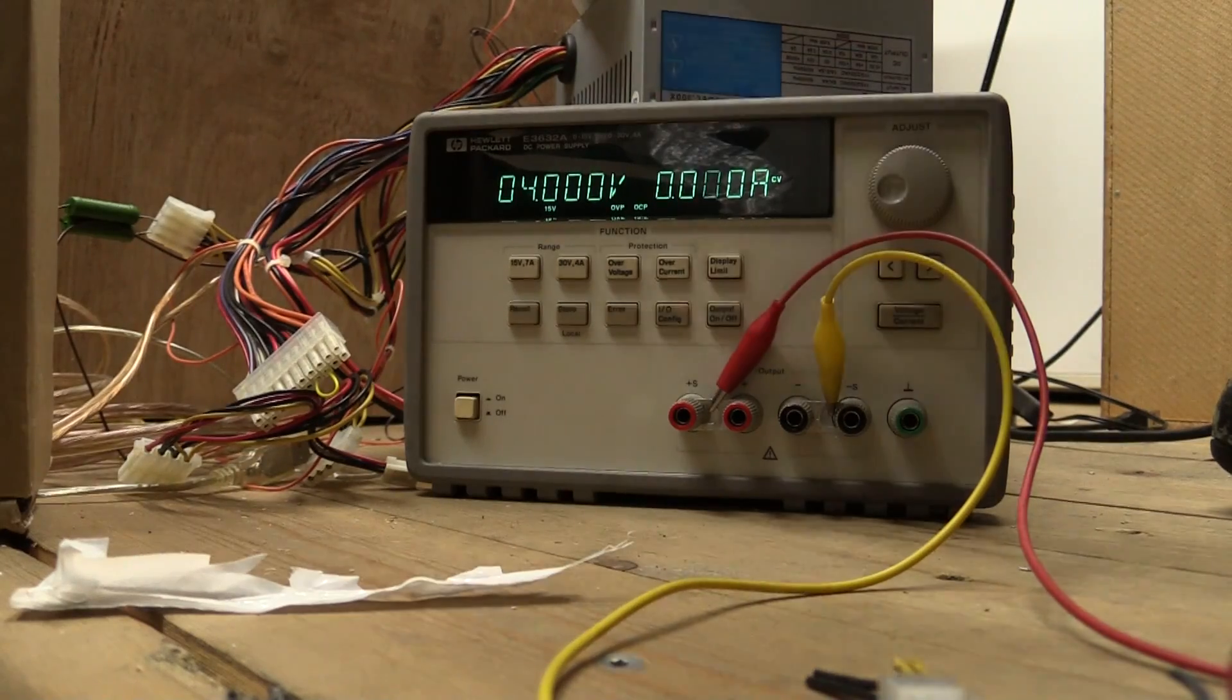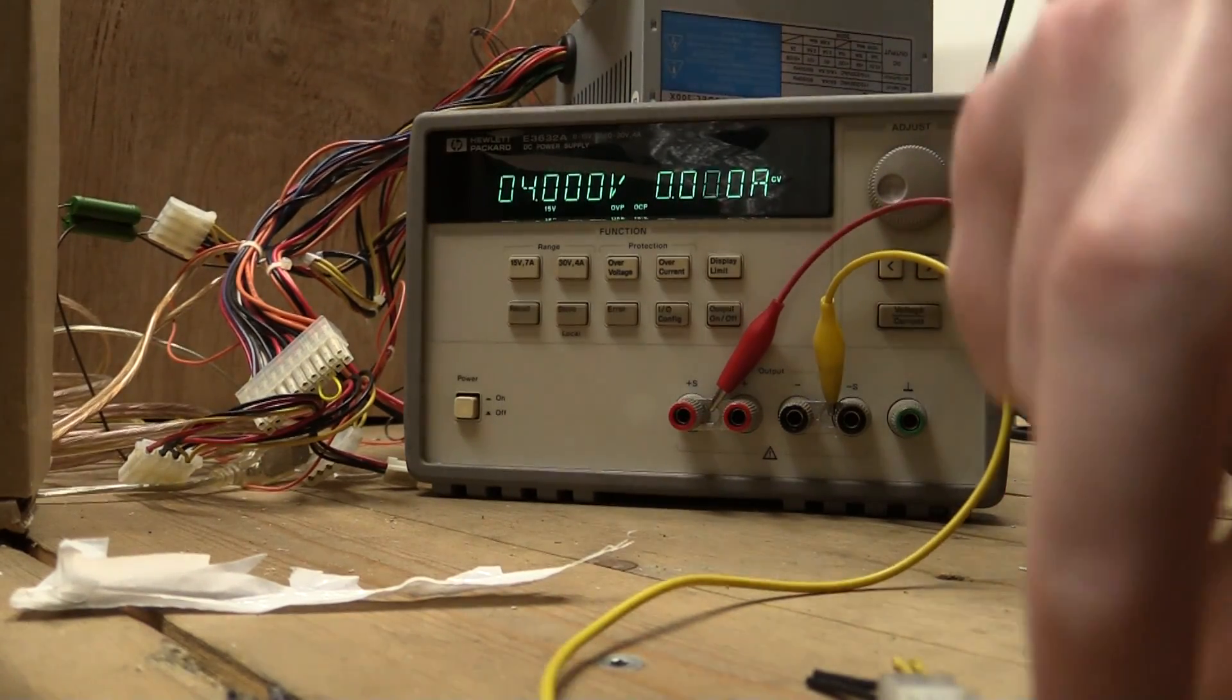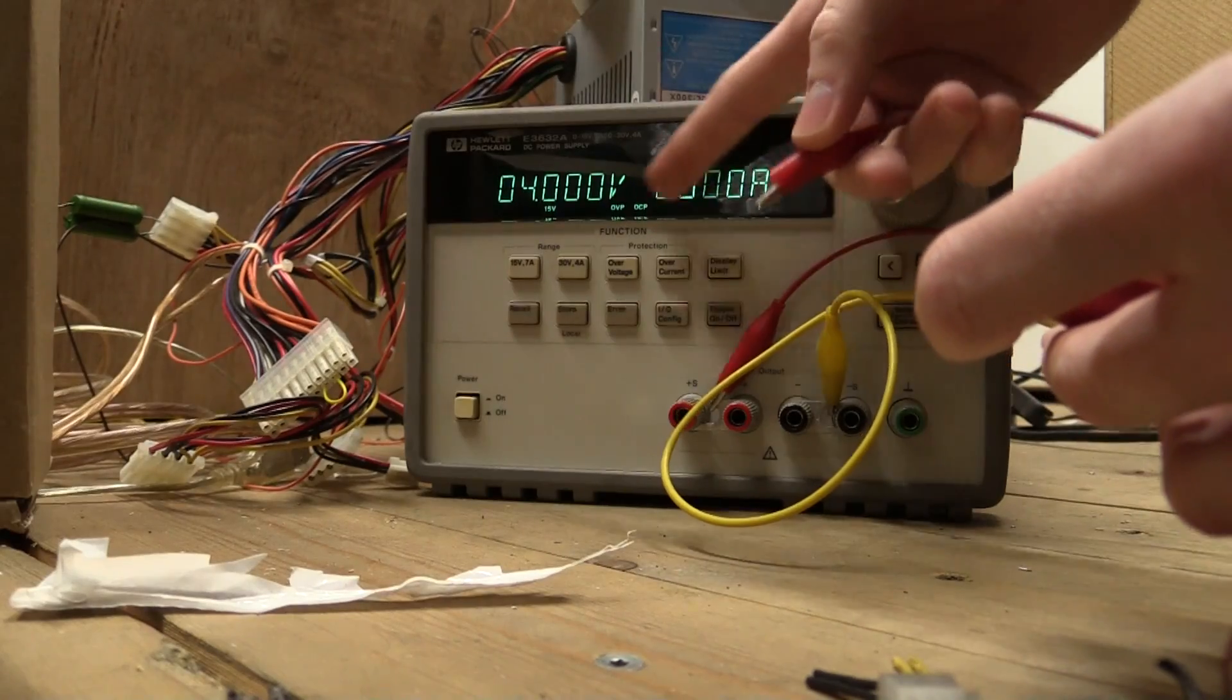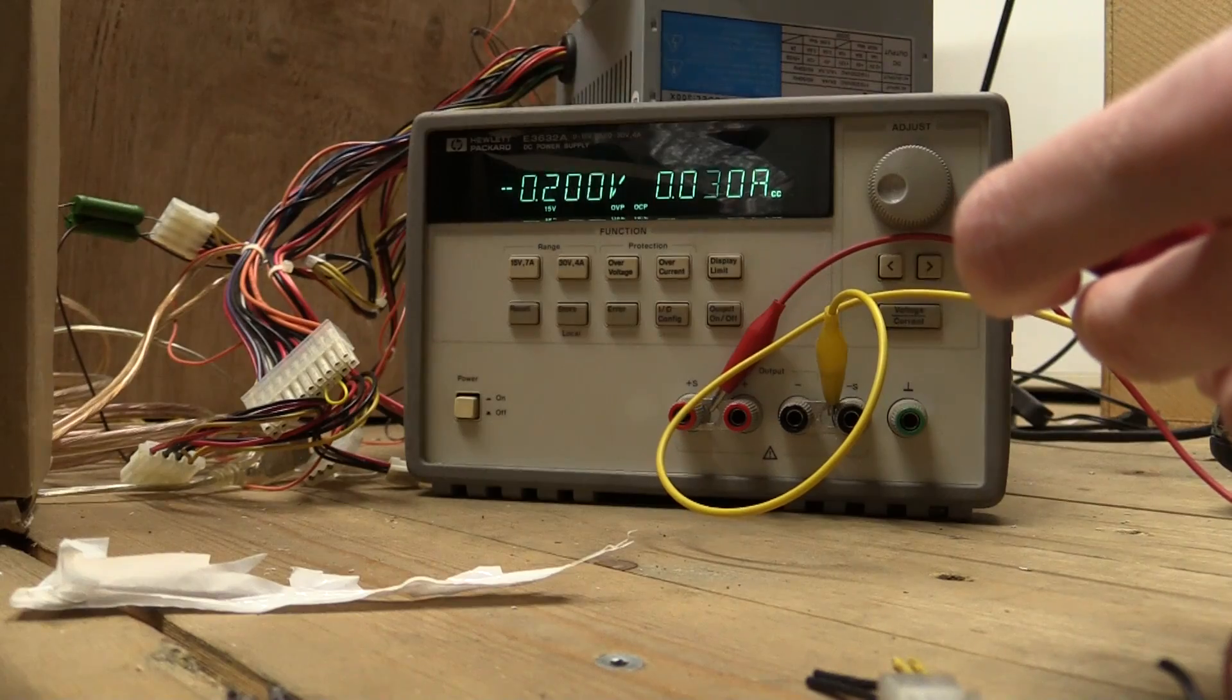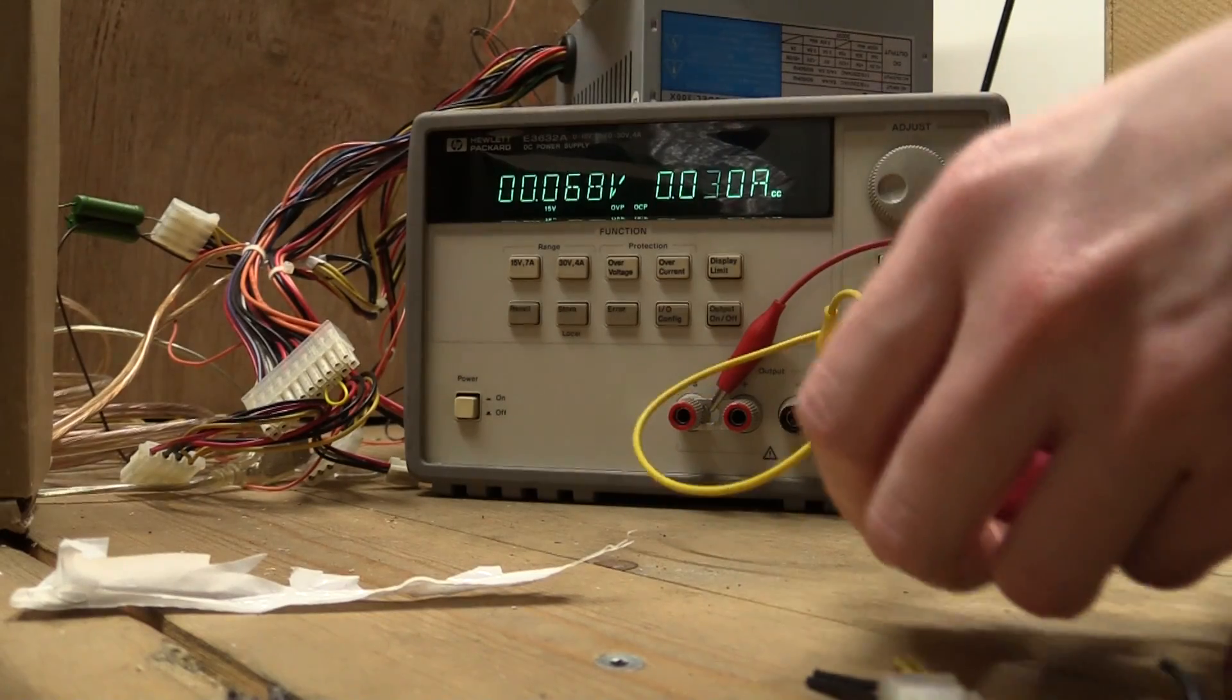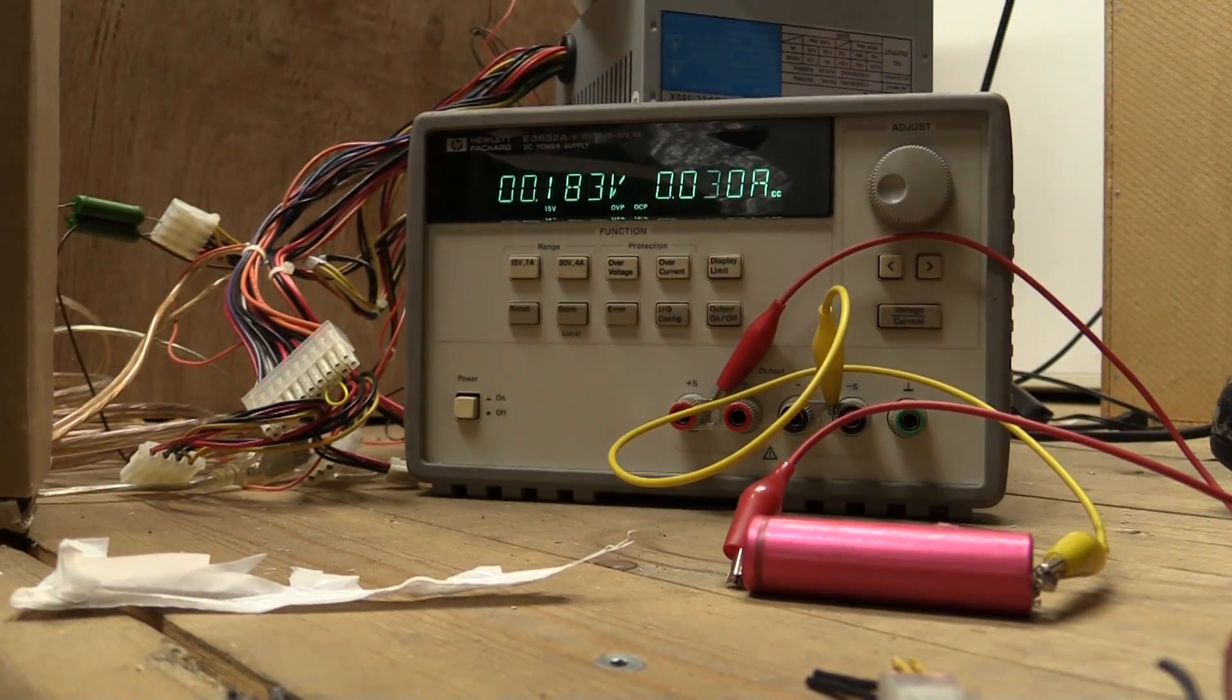So I still have the power supply set up at the 3D printer here. So I'll hook up the negative one, and when I connect the positive, what's the voltage reading here? You see, it starts by being negative.